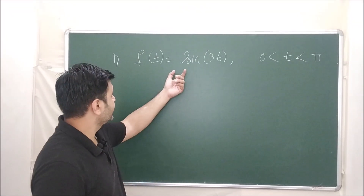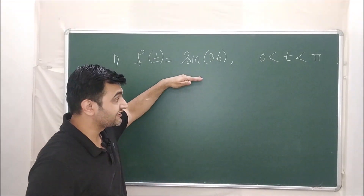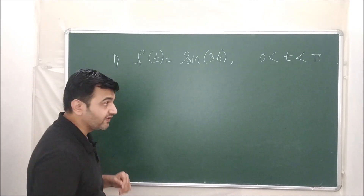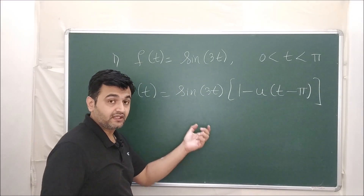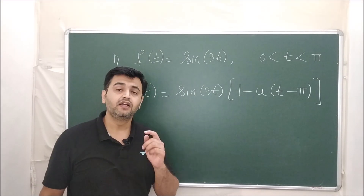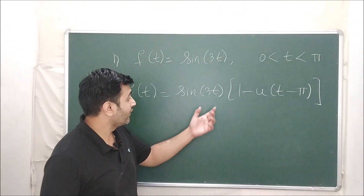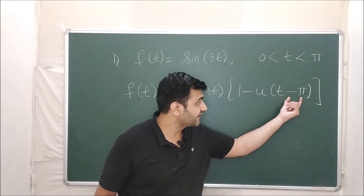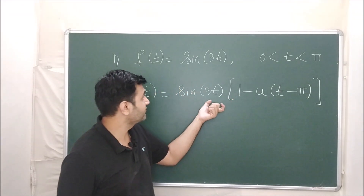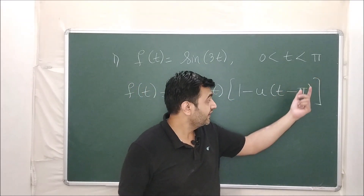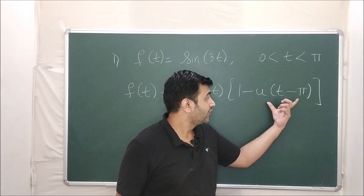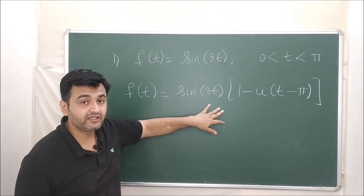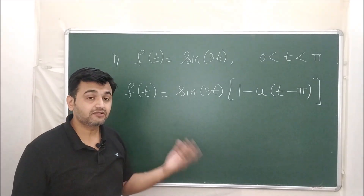The first example: the function is sin(3t) on the interval 0 to π. The question is to express this in terms of the unit step function and then find the Laplace. As we saw in the previous lecture, you can write it using unit step functions. Whenever t is less than π the output of u(t − π) is 0, so you only have sin(3t). Whenever t is bigger than π the two unit step terms give 1 − 1 = 0. So this is the same as sin(3t) · u(t) − sin(3t) · u(t − π) over 0 to infinity.